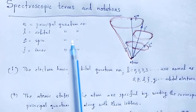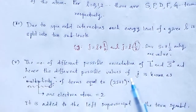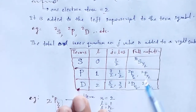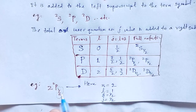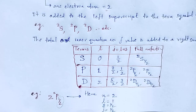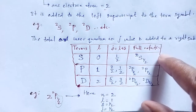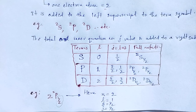With the help of this video lecture, we understand what spectroscopic terms and notations are — the rules, the examples, what multiplicity is, what terms are, the notation principle, and the significance of those notations. If we consider an atom consisting of more than two electrons, then the sum of orbital angular momentum and spin angular momentum equals the total angular momentum. Thank you.